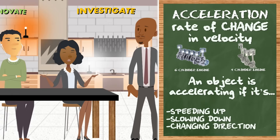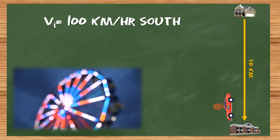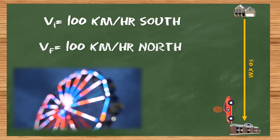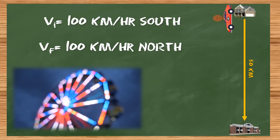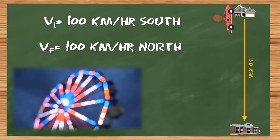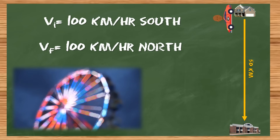Wait — changing direction counts as acceleration? If a car goes from 100 kilometers per hour south to 100 kilometers per hour north, are those the same velocities? No! So if the velocity changes in any way, that is acceleration. Even if a Ferris wheel is going at a constant speed, it's still accelerating because it's changing direction — in a circle.